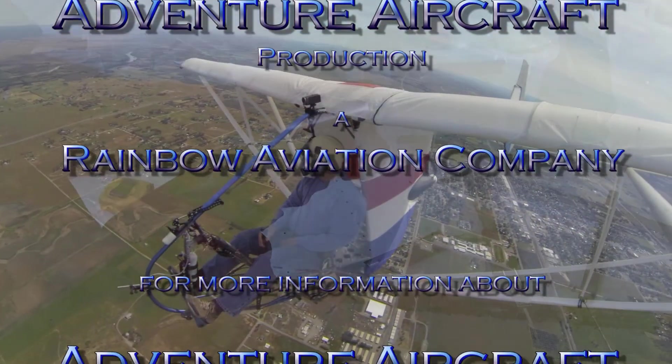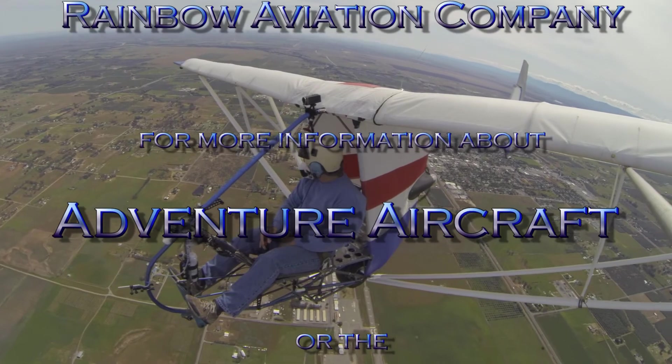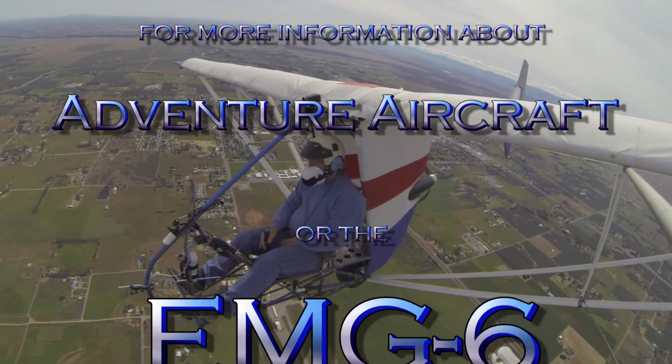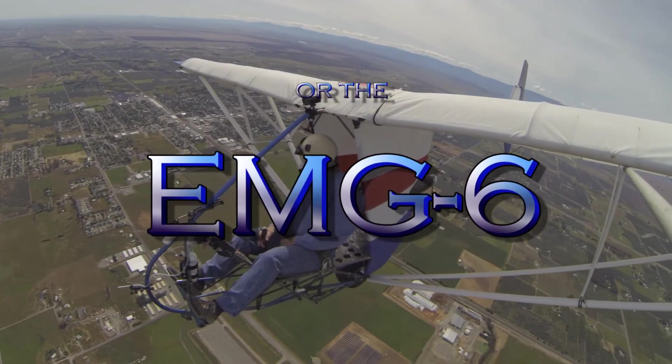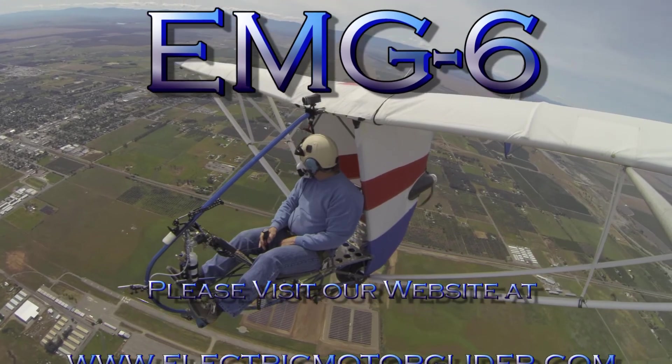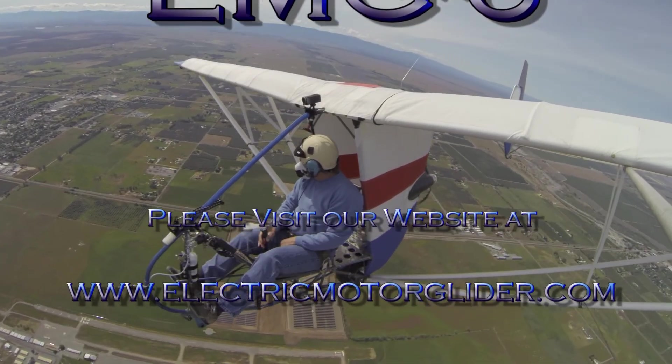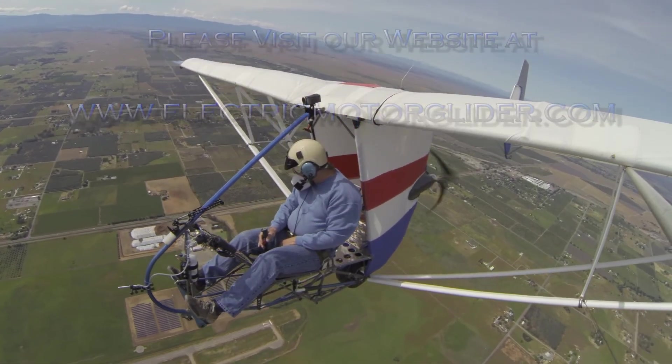We have now come to the end of another episode of building the EMG-6. In this episode, we showed you how to manufacture the keel pockets from 4130 steel tube. Until next time, happy building and remember to like us on our YouTube channel. For more information about adventure aircraft and the EMG-6, please visit our website at www.electricmotorglider.com